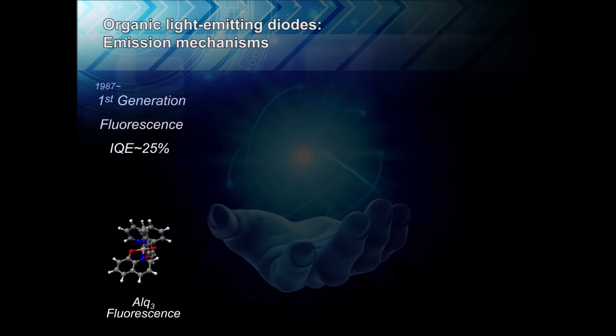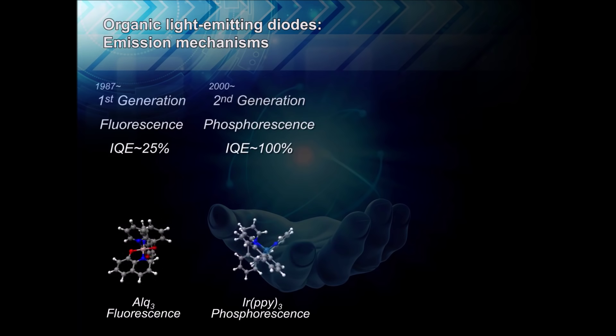Organic light-emitting diodes are emerging as a highly attractive technology for displays and future lighting. But until recently, there were only two practical emission mechanisms for these light-emitting devices: fluorescence and phosphorescence, each having trade-offs among efficiency, cost, and stability.